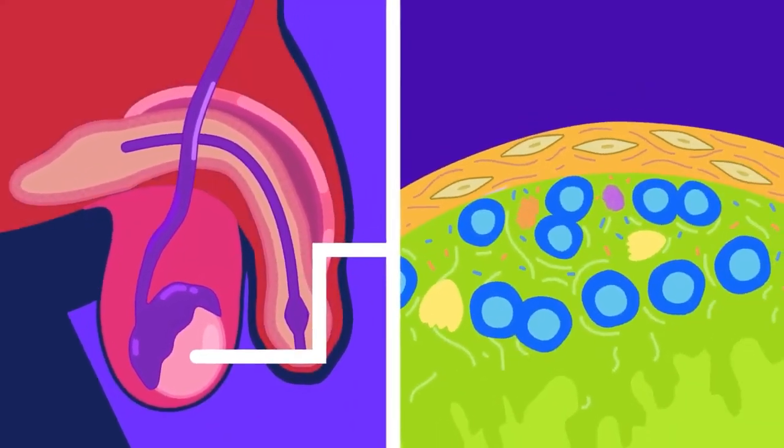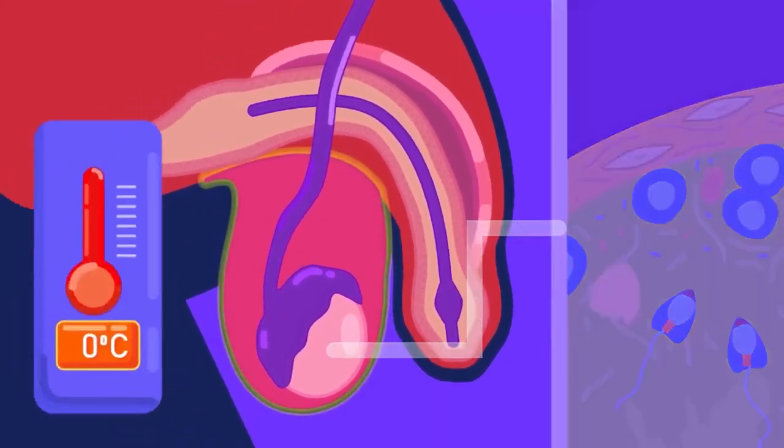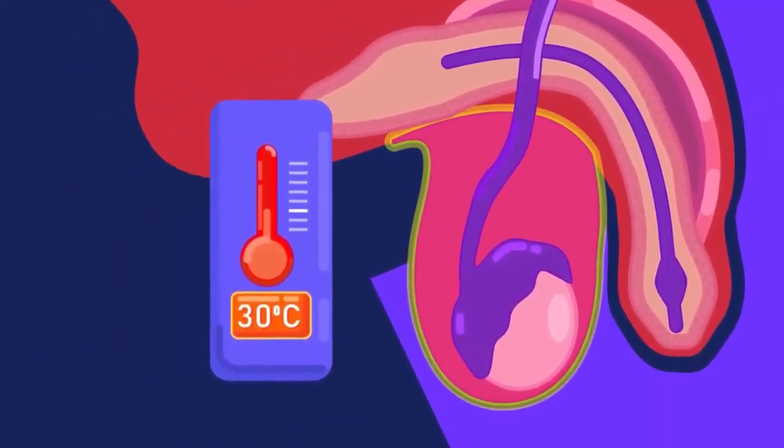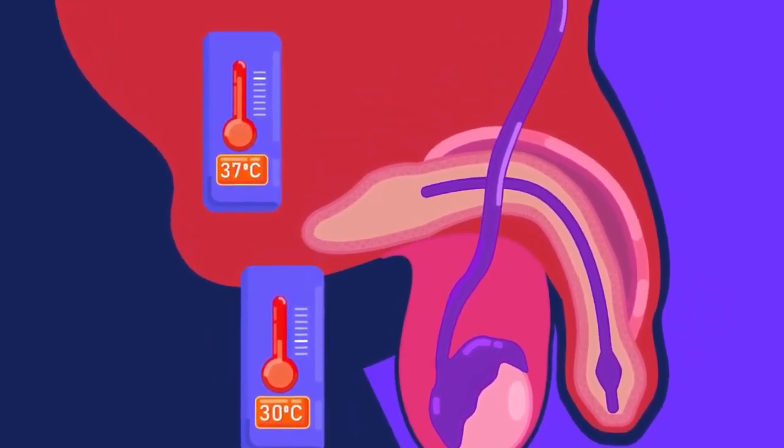The development of sperms requires a temperature around 1 to 8 degrees less than body temperature, around 30 degrees Celsius. This is why the testes lie in the scrotal sacs, outside the main body.